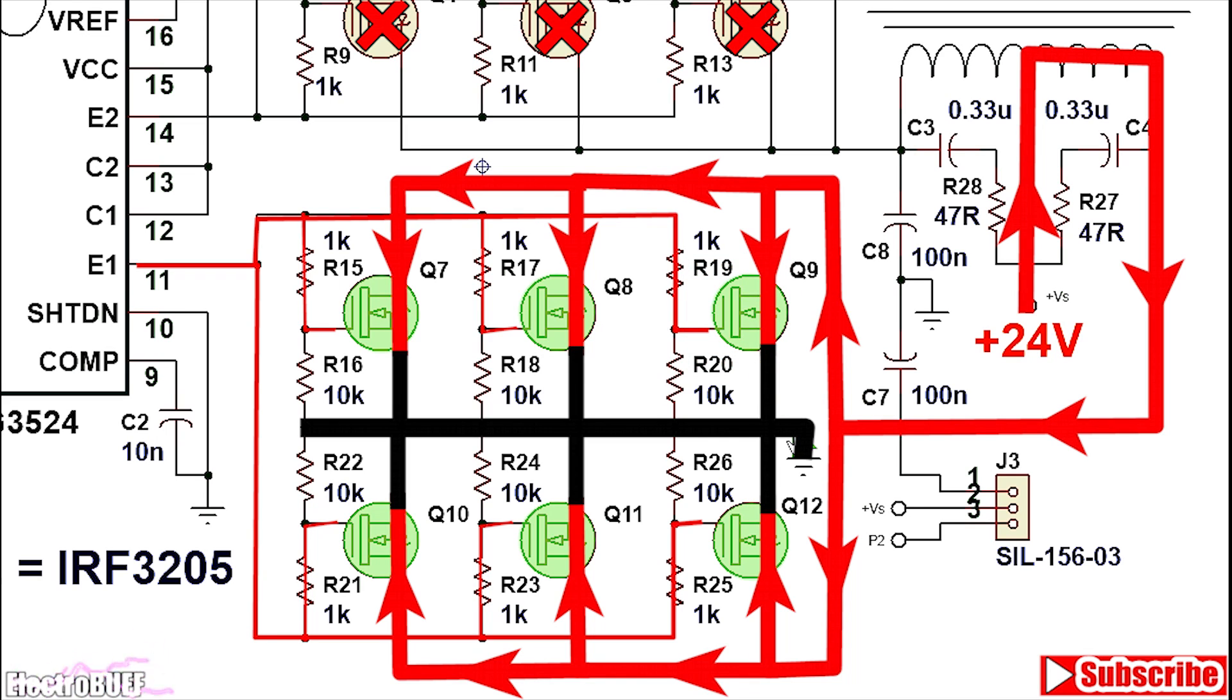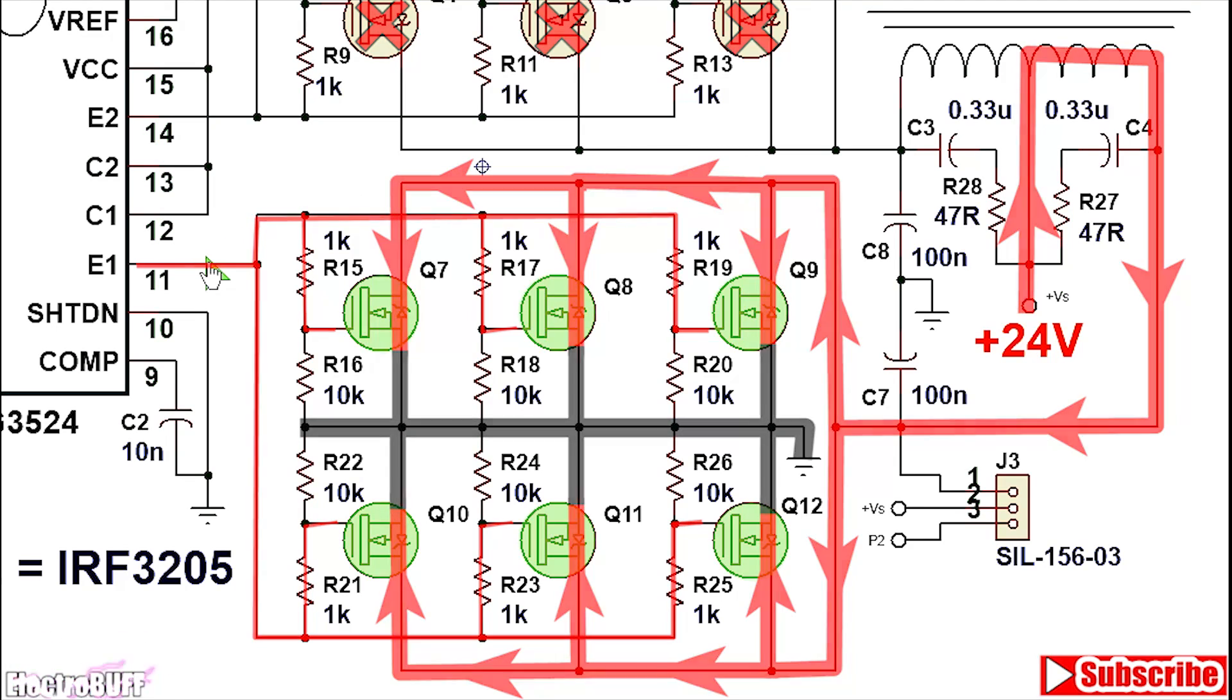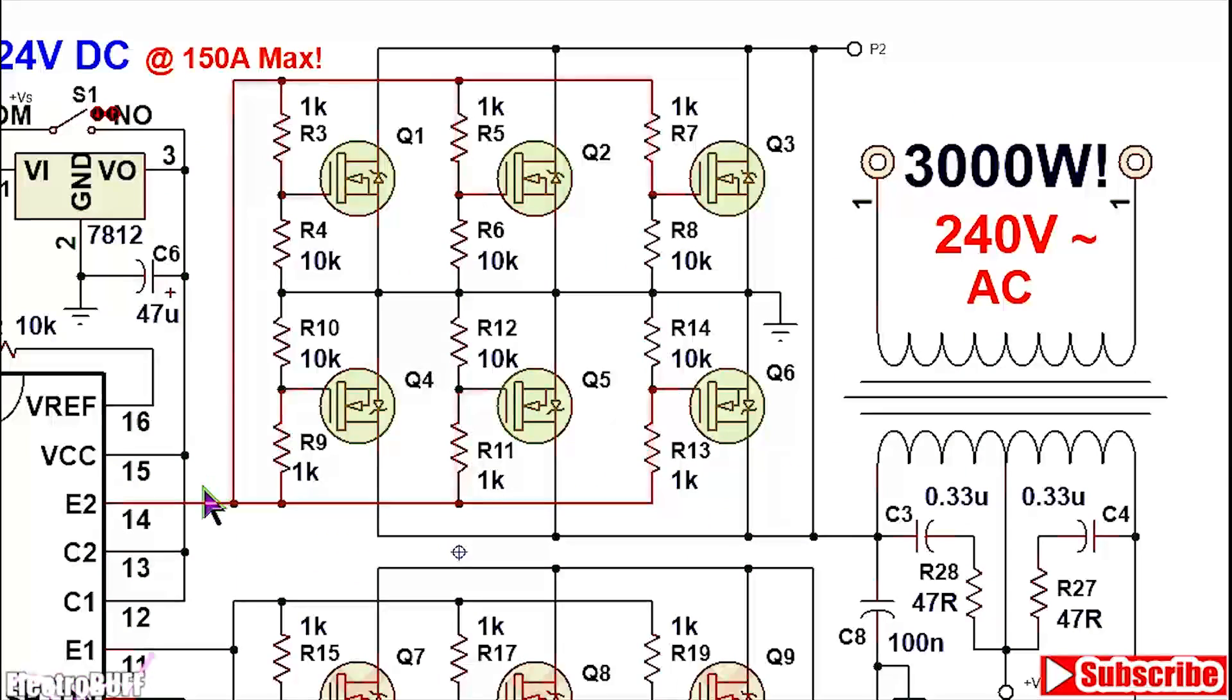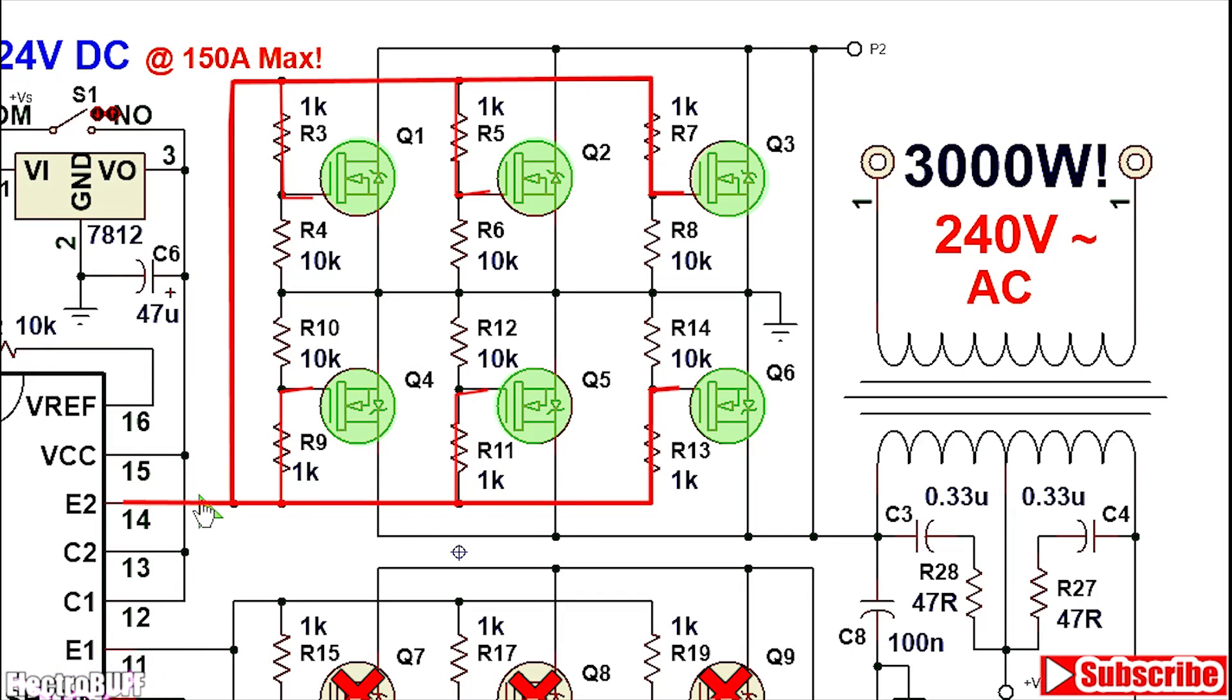After some time the output at pin 11 will go low and that at pin 14 will go high. The MOSFETs Q7 through to Q12 will turn off. When the output at pin 14 goes high, the gates of the MOSFETs Q1, Q2, Q3, Q4, Q5 and Q6 are pulled up to about VCC and this will cause them to turn on.